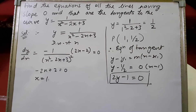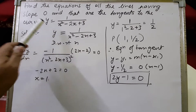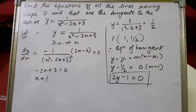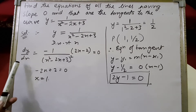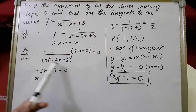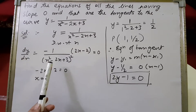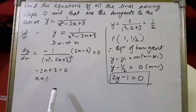Let's see another sum. It is given: find the equations of all lines having slope 0 that are tangents to the curve y equals 1 upon (x squared minus 2x plus 3). The slope of the tangent is given as 0, and we have to find all possible equations of the tangent. When we differentiate with respect to x, we get dy/dx equals minus 1 upon (x squared minus 2x plus 3) squared, times (2x minus 2) by chain rule. Since the slope is 0, this whole expression equals 0.